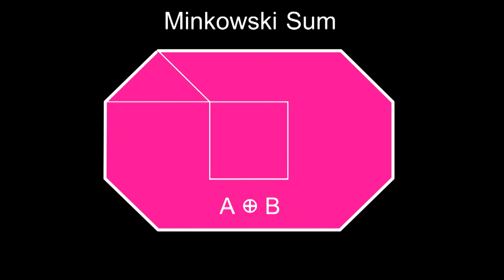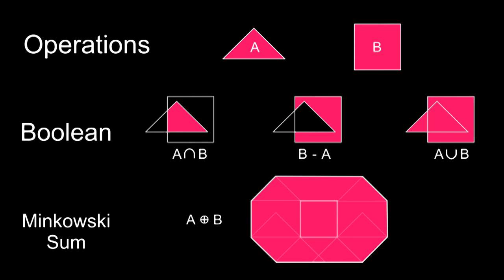Imagine I have two shapes, a triangle and a square. And I want to know what is the set of all points where I can place this triangle down and have it overlap the square at some point. That's a Minkowski sum. So to get this algorithm to work, we need two things. We need Boolean operations, and we need Minkowski sums.